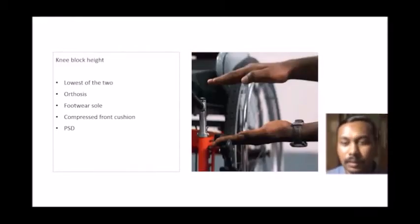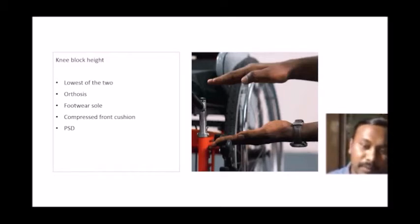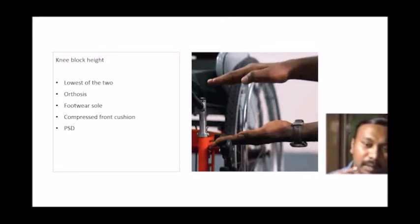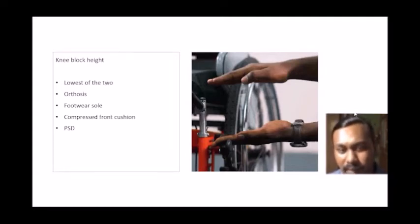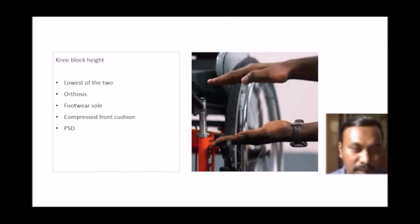For knee block height, there is a telescopic silver rod with multiple holes — it extends upward for taller kneeling height and goes down for shorter kneeling. The heel-to-patella height determines the knee block height. Take the longer measurement if there is LLD. Consider footwear sole height — add it here. For the front cushion, note that for footrest height you subtract the compressed front cushion height, but for knee block height you add the compressed front cushion height.